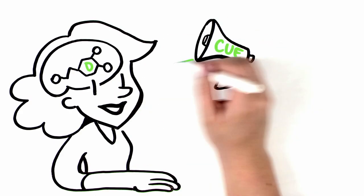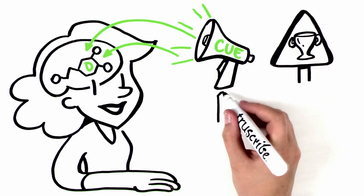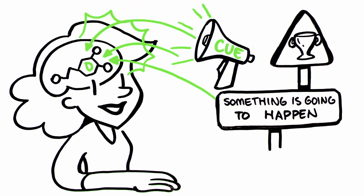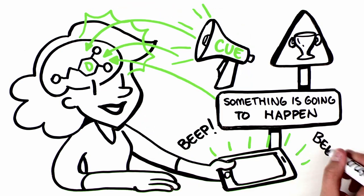The dopamine system is especially sensitive to cues that a reward has arrived. Even a small cue that something's going to happen can set off our dopamine system. The beep of our phone increases the addictive effect.